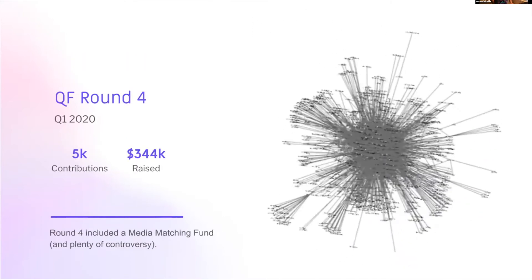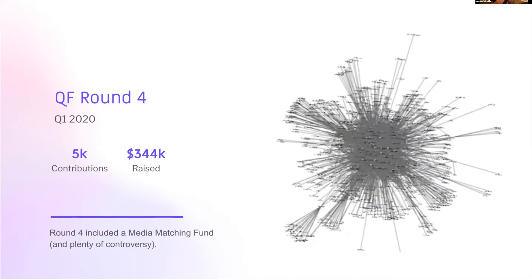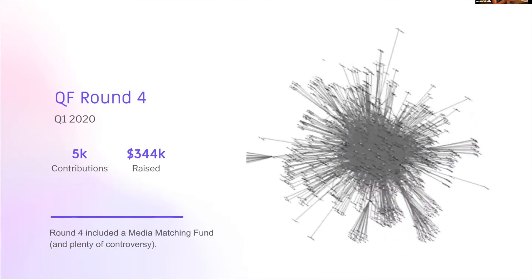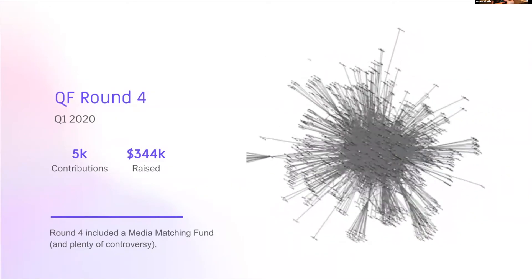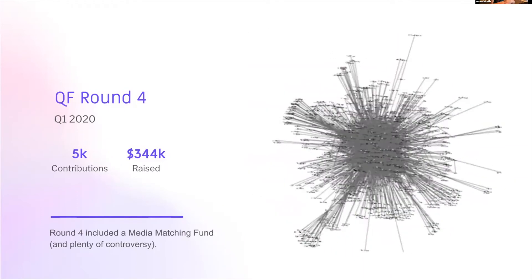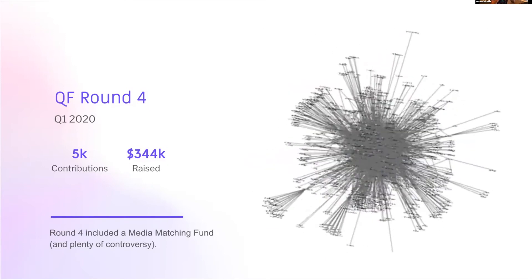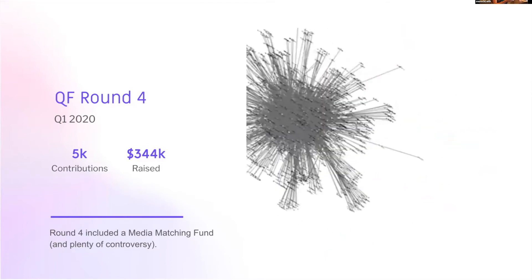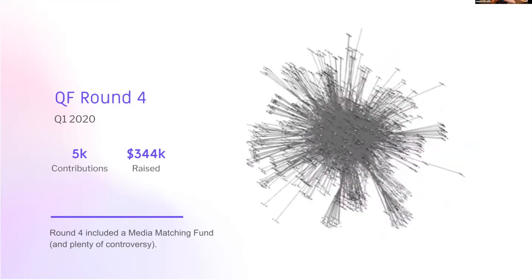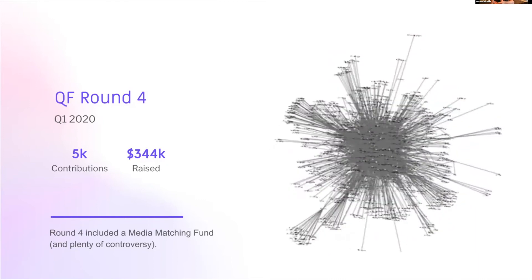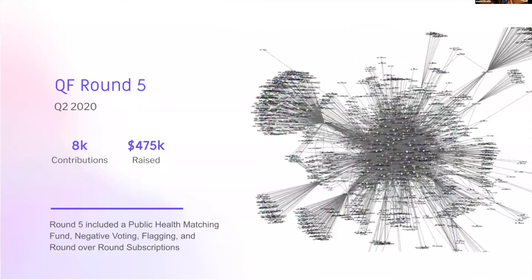Round four, we did $350K, and you can see the preference map is growing. Vitalik came up with the idea of adding a media matching round in round four — up until then we were only doing open source contributions. When we added a media matching round, it stirred up interesting conversations like: are Twitter accounts creating public goods if they're fighting disinformation or creating journalism? The really cool thing was it pulled more contributors into the quadratic funding round, which supported more of the open source software developers.